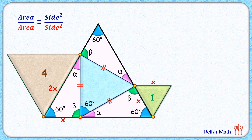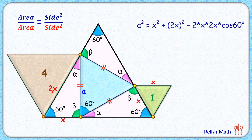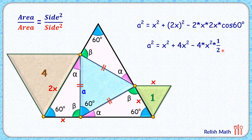We can say that this side length is x centimeters. Let's assume the blue equilateral triangle has side length a centimeters. Applying the cosine law in this triangle: a² = x² + (2x)² − 2·x·2x·cos60°. Here, (2x)² = 4x² and cos60° = 1/2. Simplifying, we get a² = 3x².